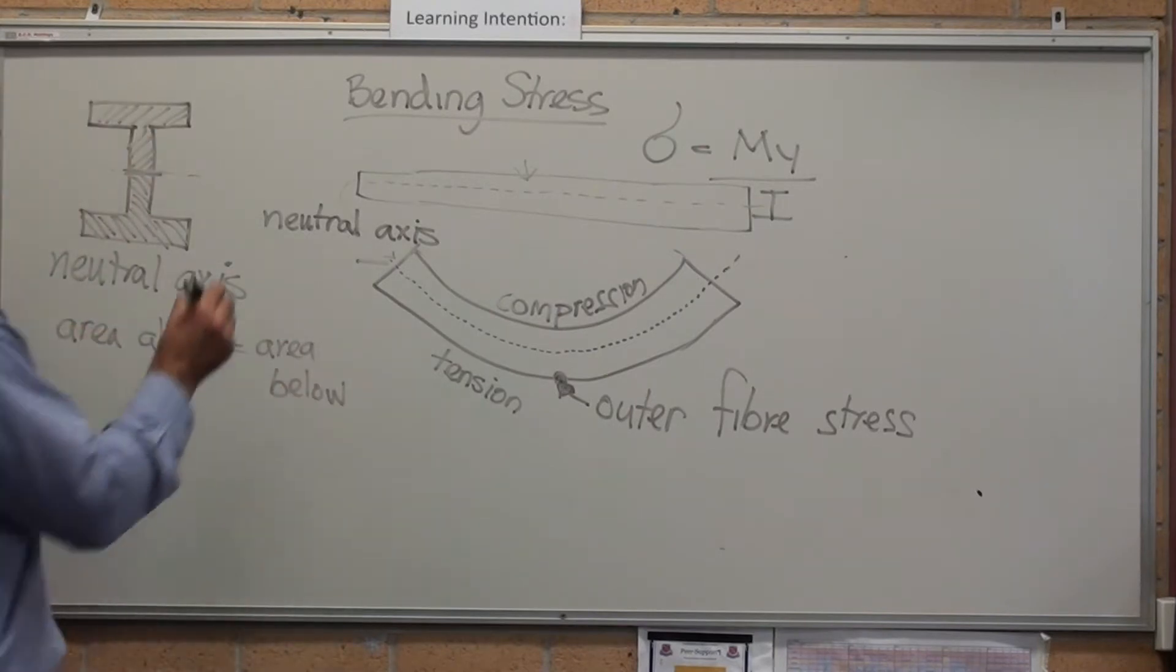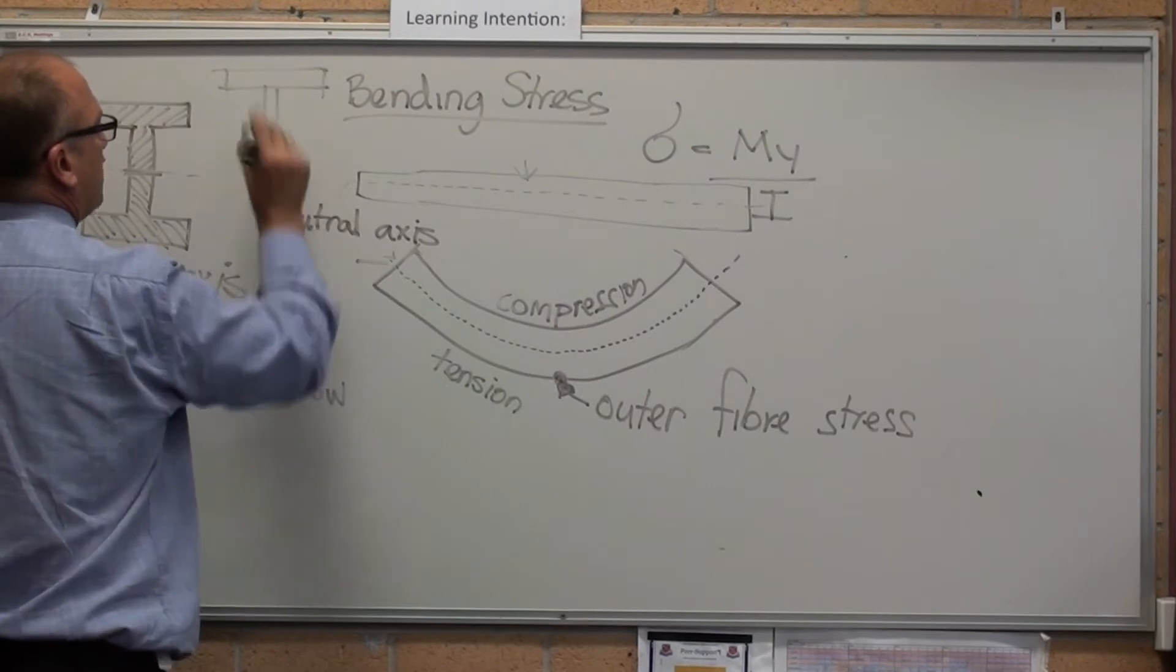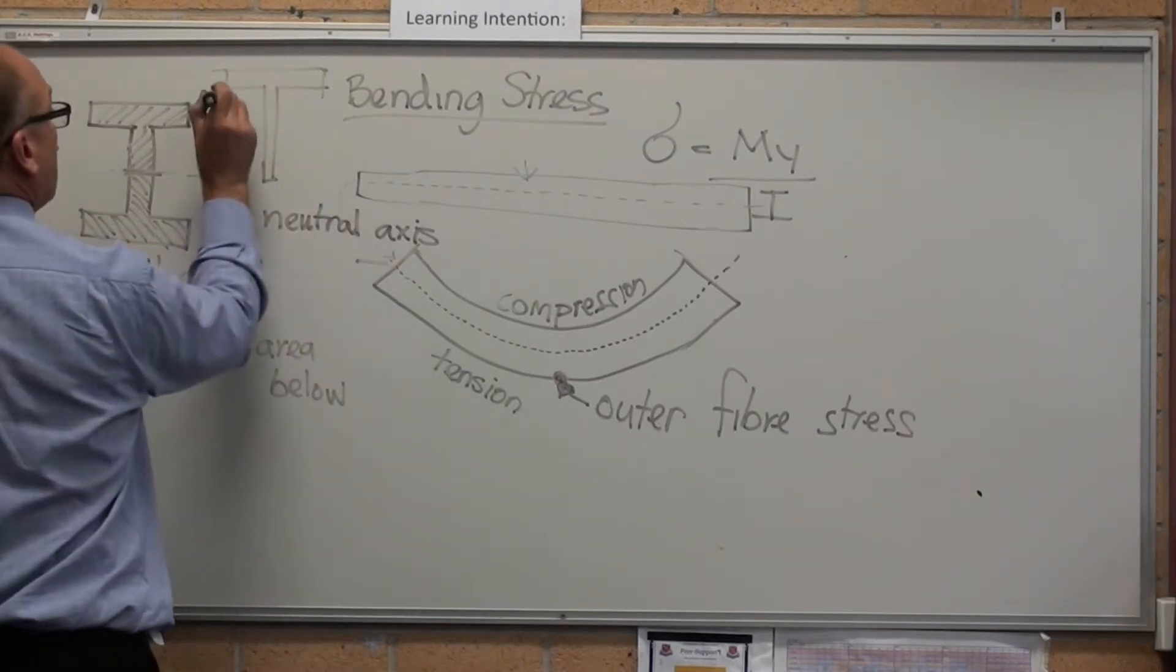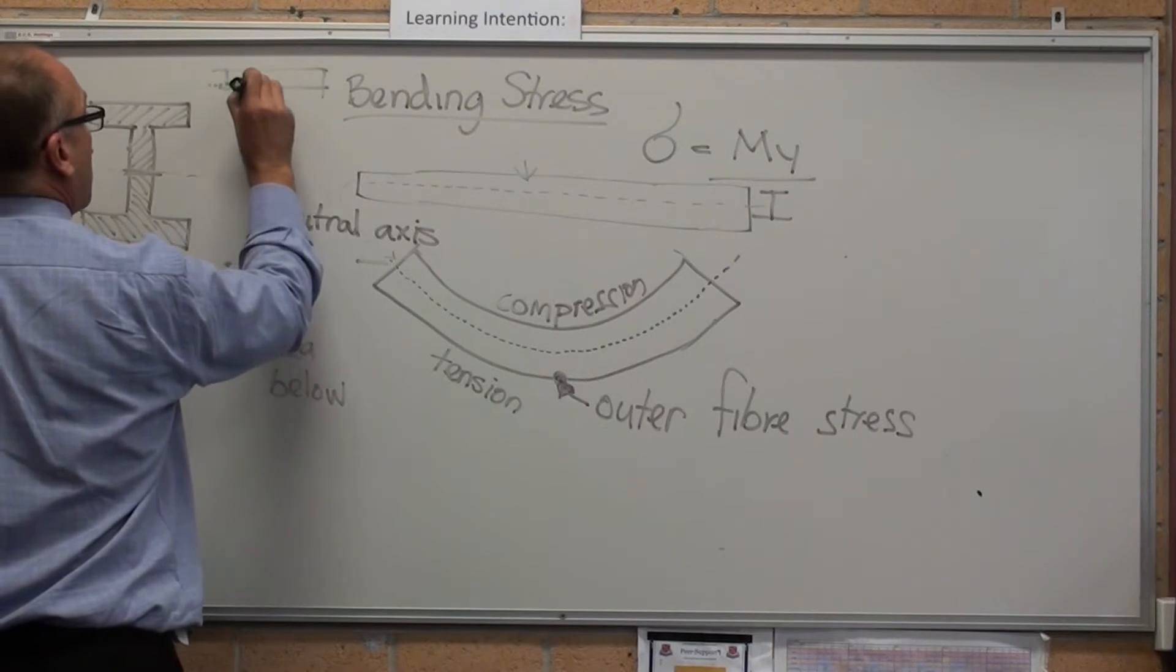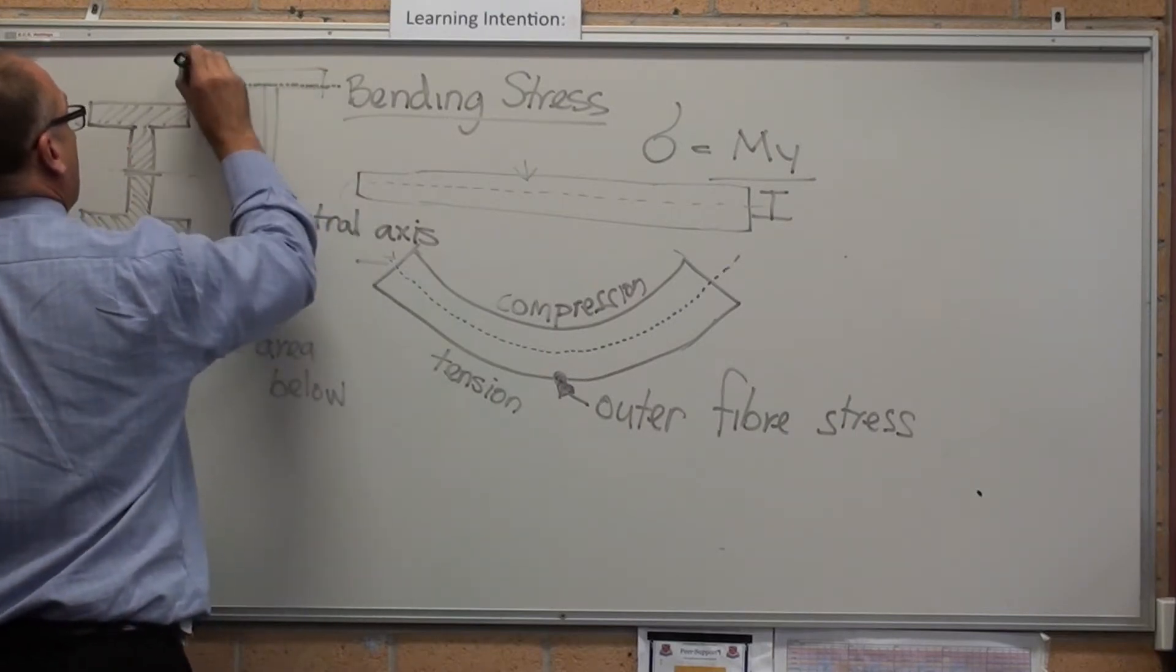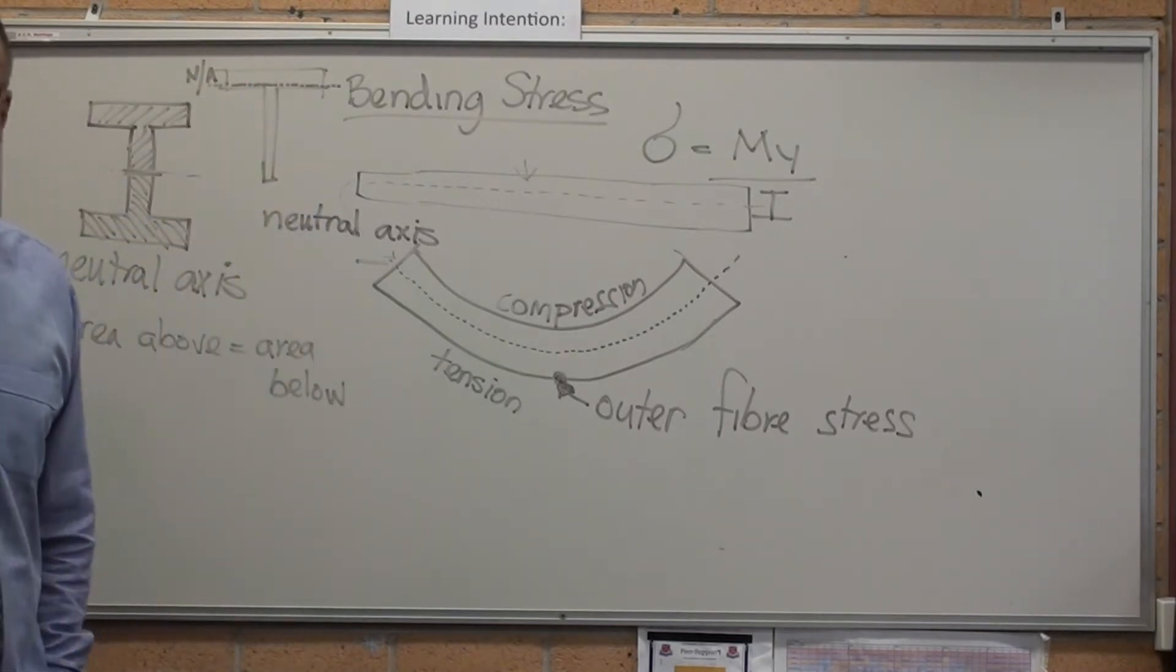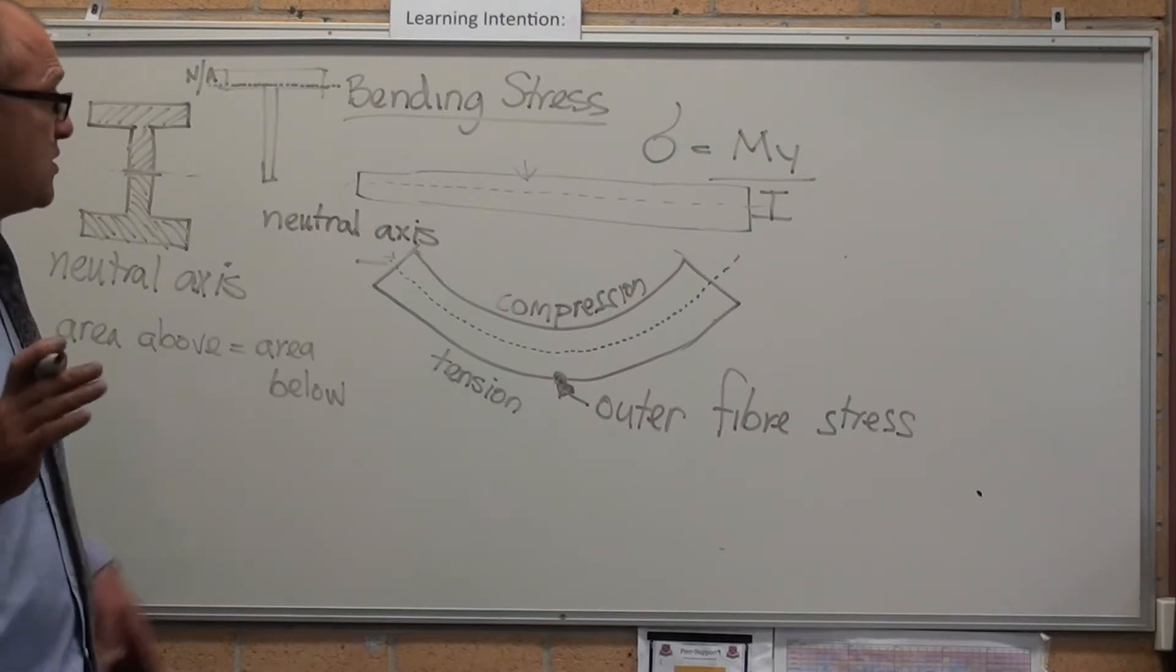If I've got a T-beam, let's draw this to scale, I'd say the neutral axis might be about there where I'm putting in the dots. The neutral axis might be about where the dots are. Area above equals the area below. That's absolutely critical for this equation.